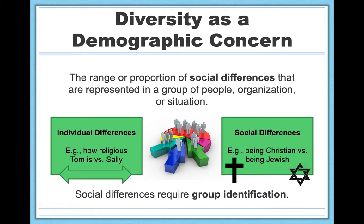When we're talking about diversity as a demographic concern, we're specifically focused on social differences. Focusing on representation or numbers isn't inherently a bad thing — we know that compositional diversity, the statistical representation of different groups within a given environment like a classroom or workspace, matters and does make a difference. But that shouldn't be our only concern. Social categories are useful for describing people and adaptive in that they allow us to guess information about people, but this has a dark side as well. As psychologists, we don't just care about social statistics; we want to know how these social identities affect a person's thoughts, emotions, and behavior.